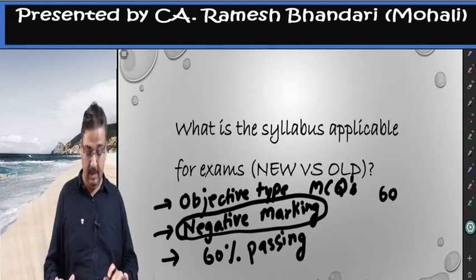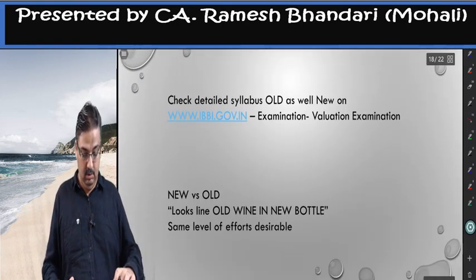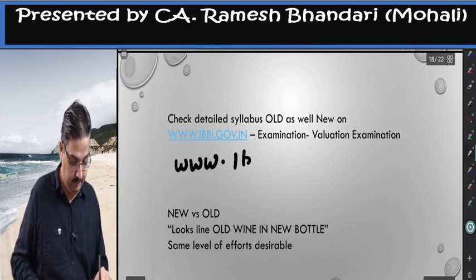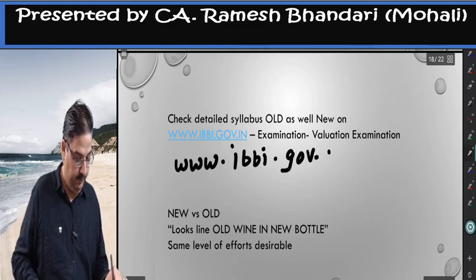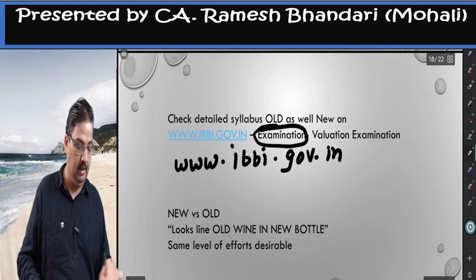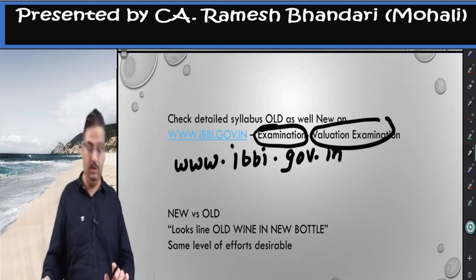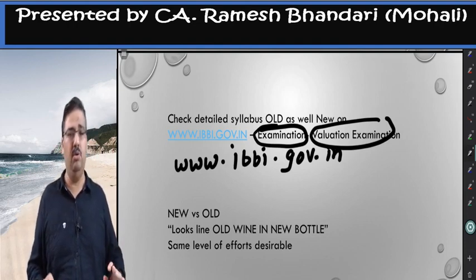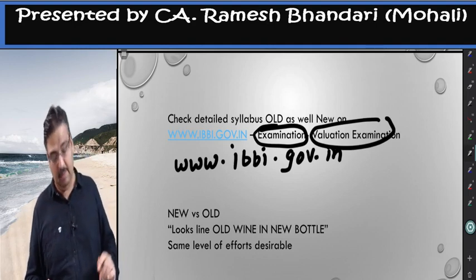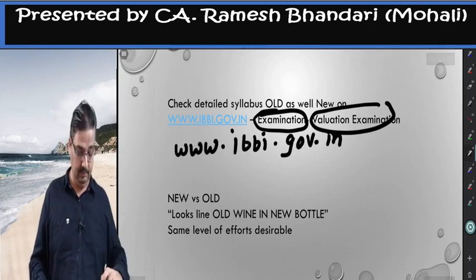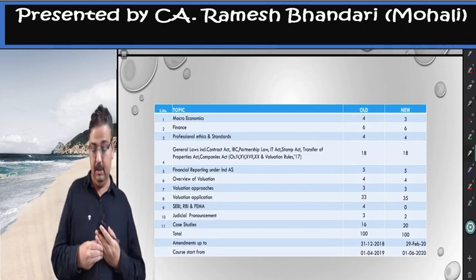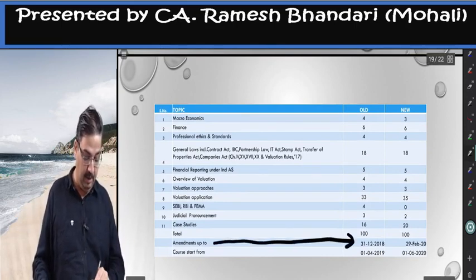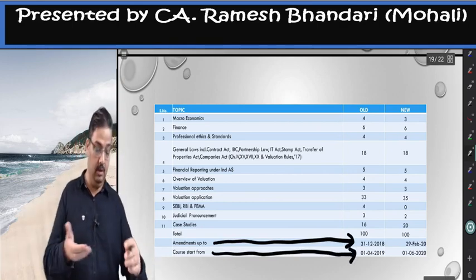In any case, if you are already registered with an RVO you can prepare for old and later work on the amendment part for new — that is your own choice. You can find all the details at www.ibbi.gov.in under the 'Examination' icon, then 'Valuation Examination.' Old versus new is like old wine in a new bottle — the same things with little tweaks here and there. Same level of effort is required; the difference in effort level is not significant.